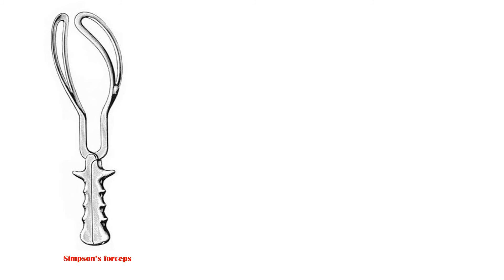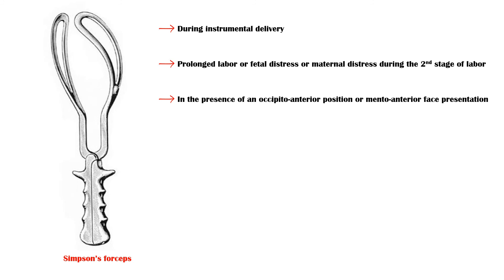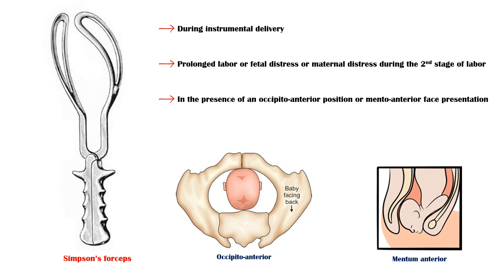Instruments used during instrumental delivery: Simpson's forceps are used in prolonged labor, fetal distress, or maternal distress during the second stage of labor in the presence of an occipito-anterior position or mento-anterior face presentation. It is also used for the delivery of the aftercoming head of the fetus in breech presentation.